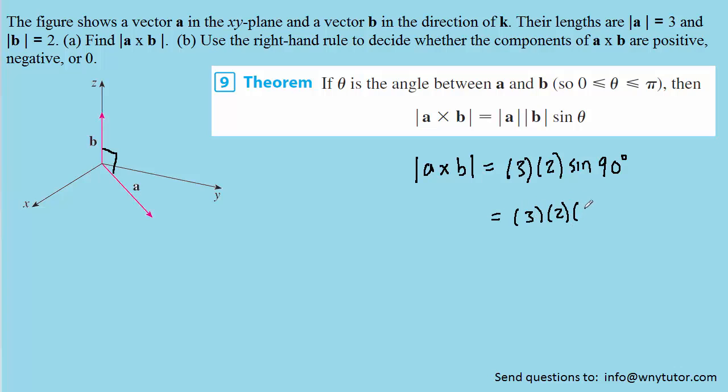The sine of 90 degrees is equal to 1. So we simply have 3 times 2 times 1, which gives us 6 and the correct answer to part A.